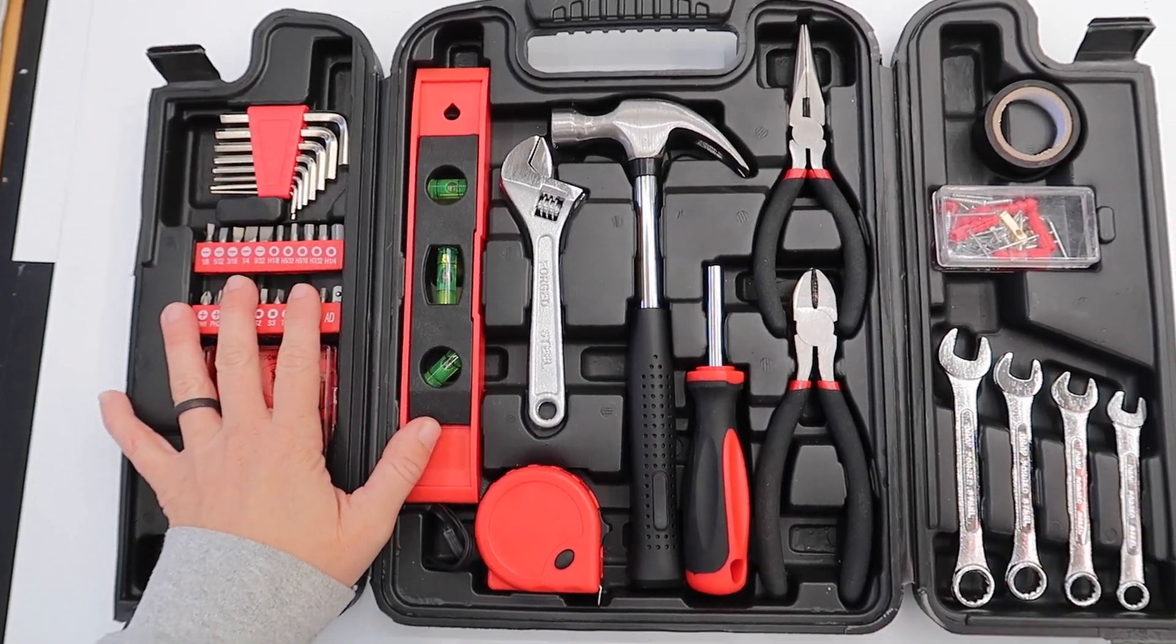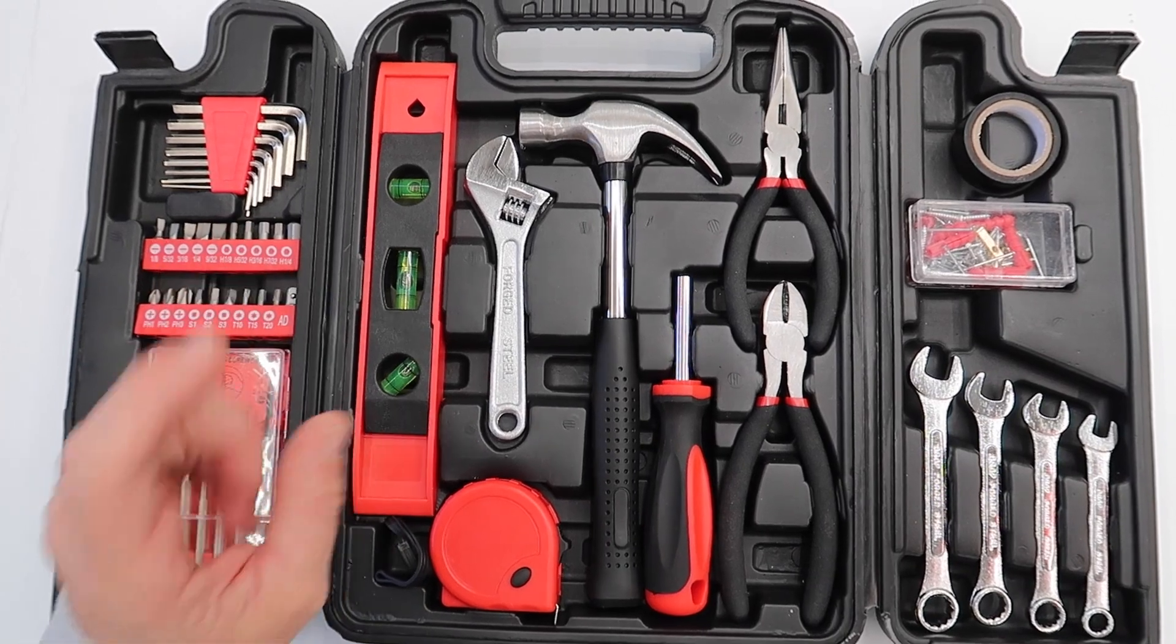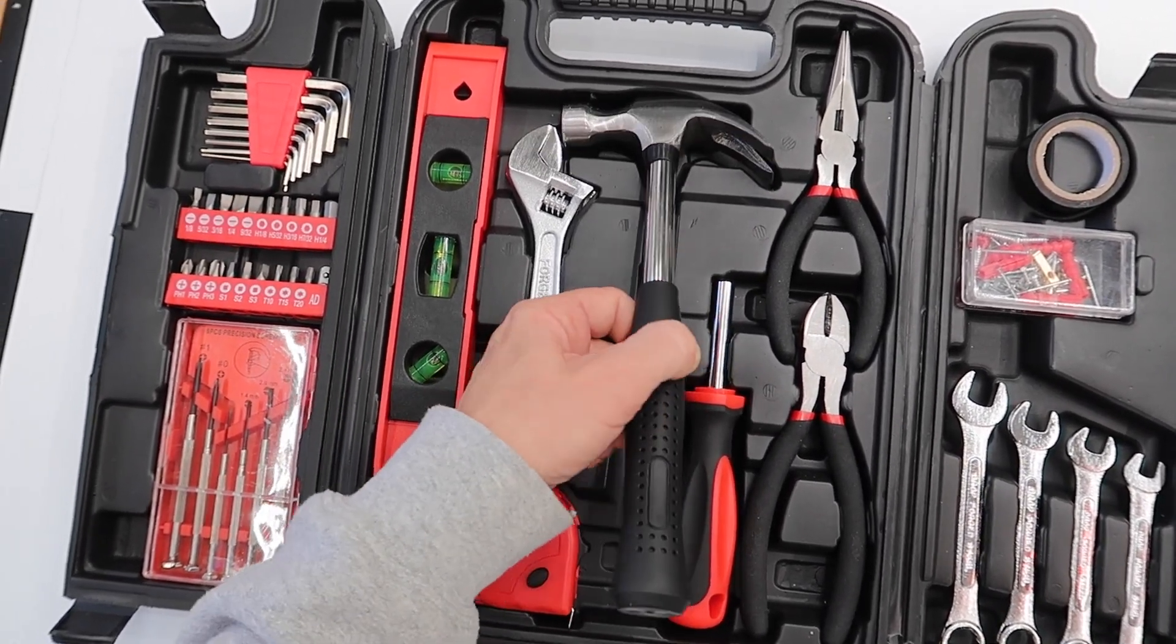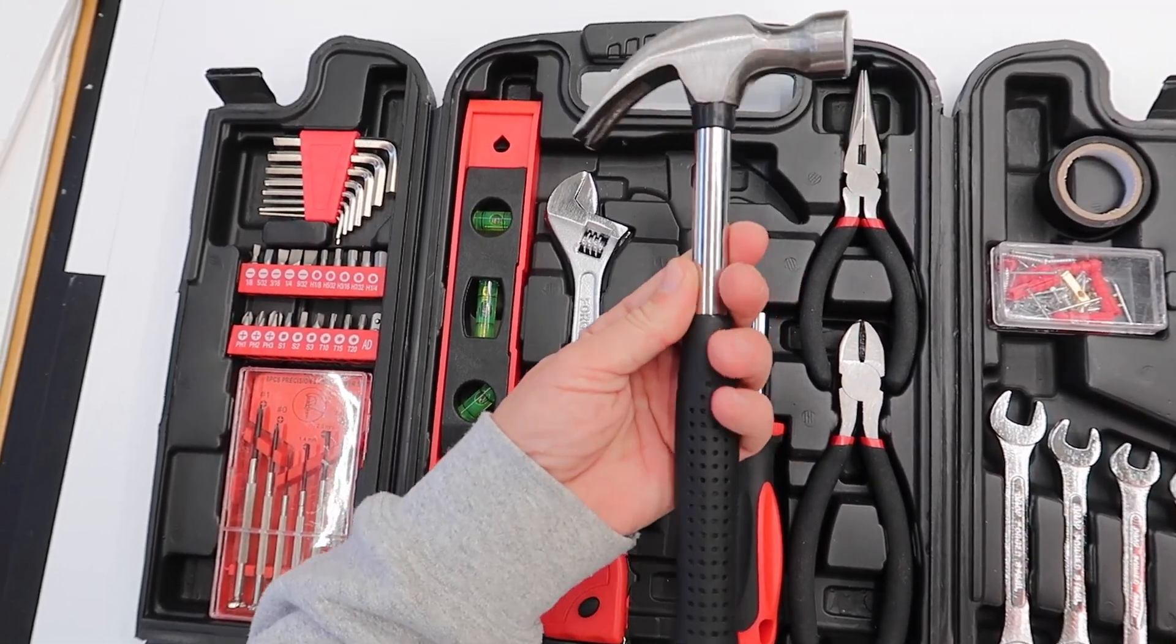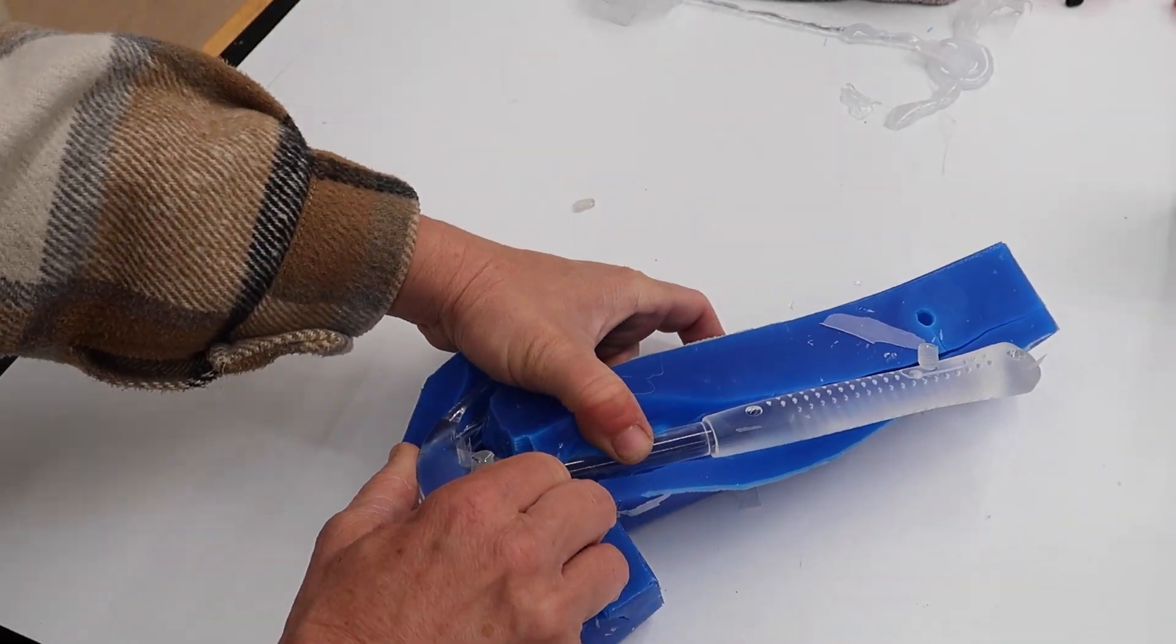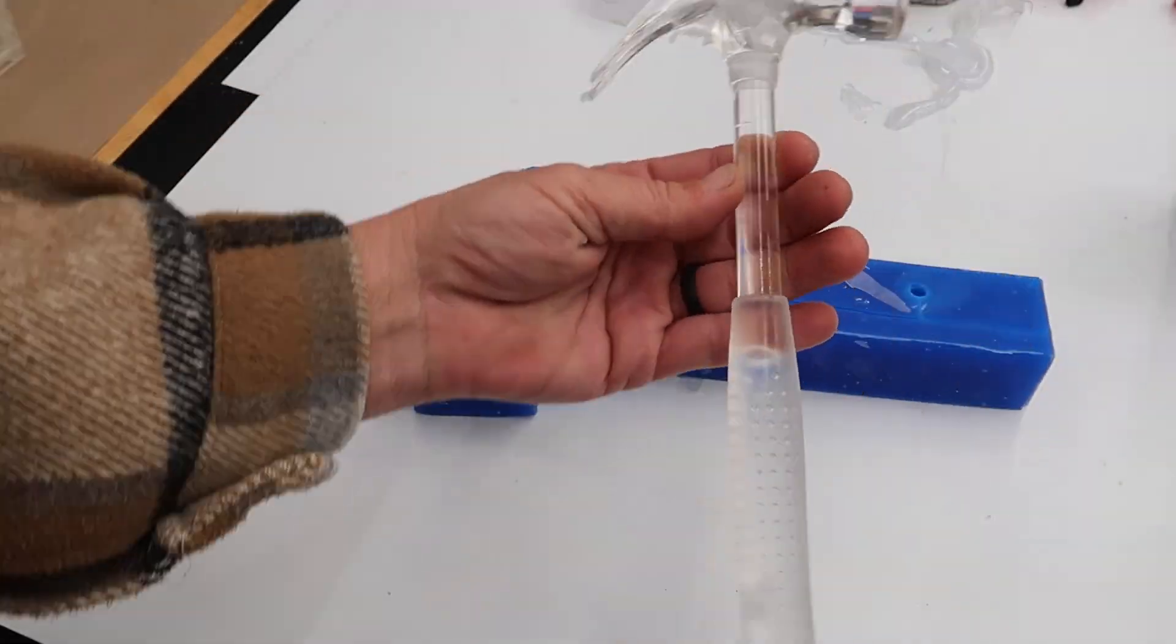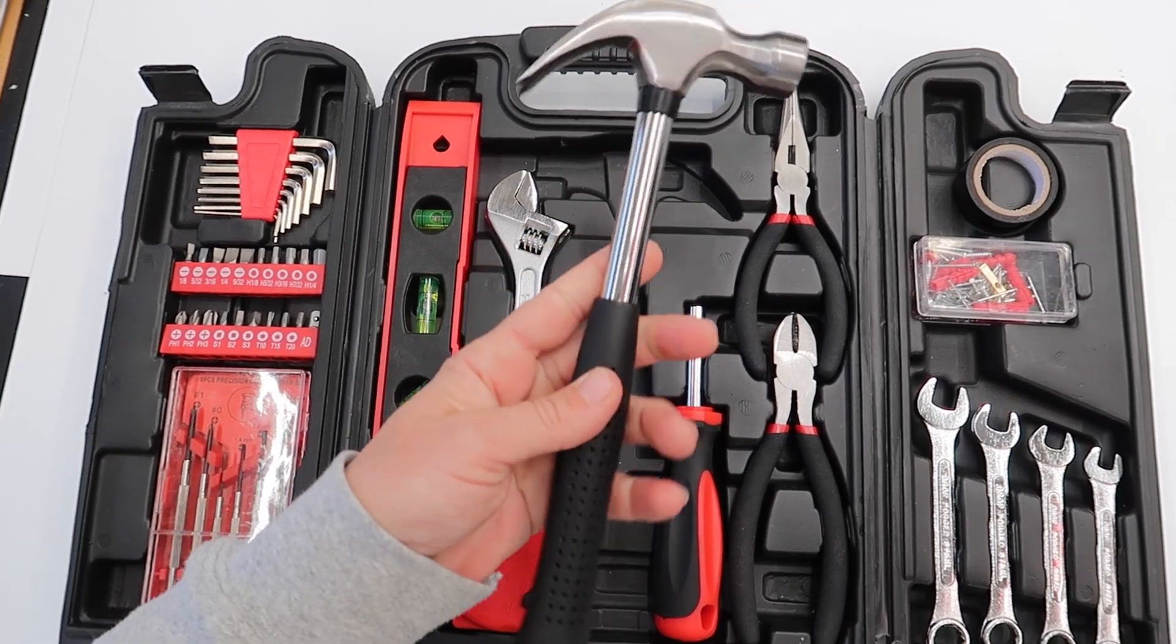Without further ado, let's get into the project. I found this set of tools on Amazon for a little over $20. I think it was perfect for being able to make our silicone molds of each one of the different tools, then we'll cast epoxy in each one of the molds, giving us a crystal clear tool.